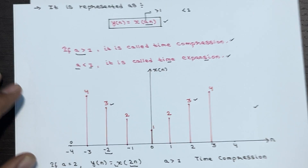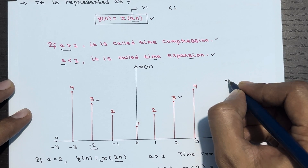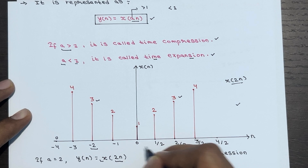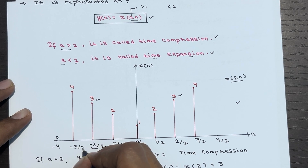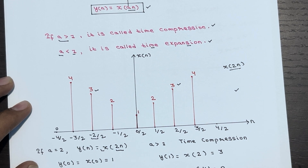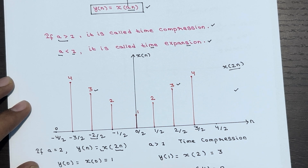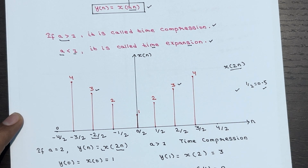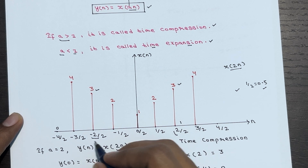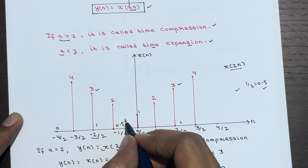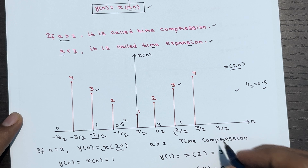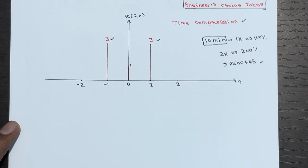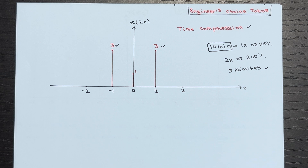The shortcut way: for the original signal, to calculate X(2n), simply divide each time instance by 2. Then pick only the discrete points — ignore fraction values like 0.5. For example, 1 divided by 2 gives 0.5, so ignore it. Only keep values like 2/2=1, 4/2=2, and so on. This gives the same compressed graph.